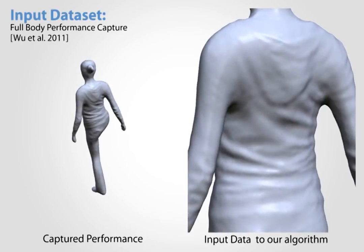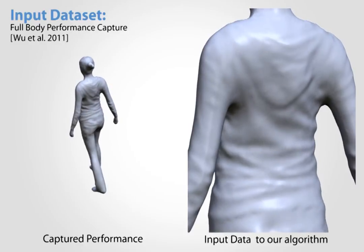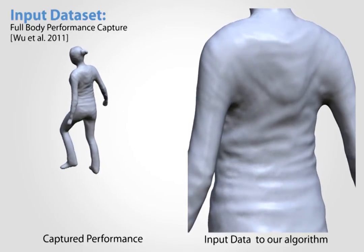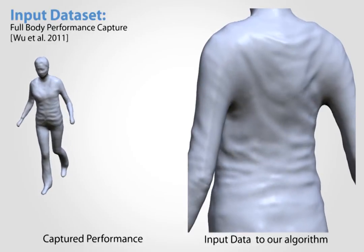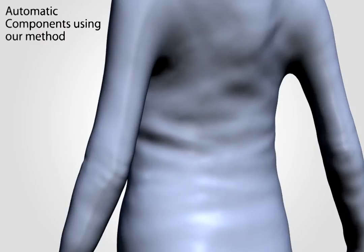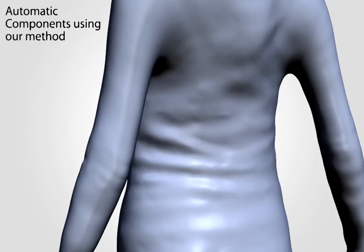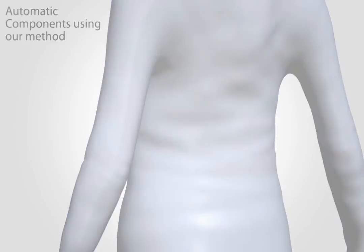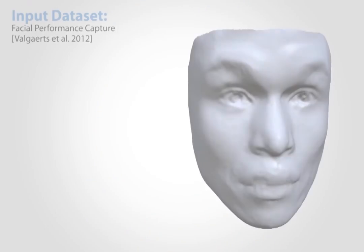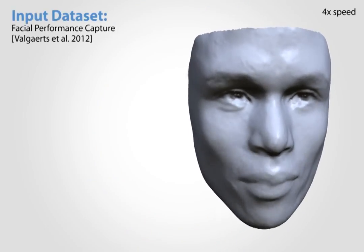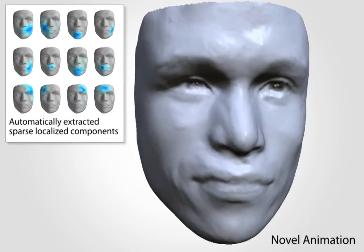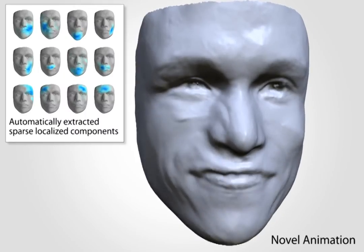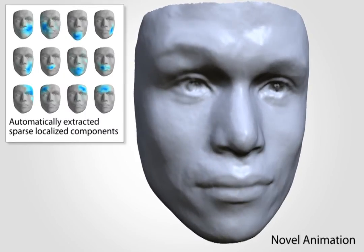We also applied our method for captured human performance. After normalizing for pose-specific articulation, our method can discover spatially localized groups of cloth folds. We process another captured facial motion sequence. This animation is generated using our learned space of deformations.